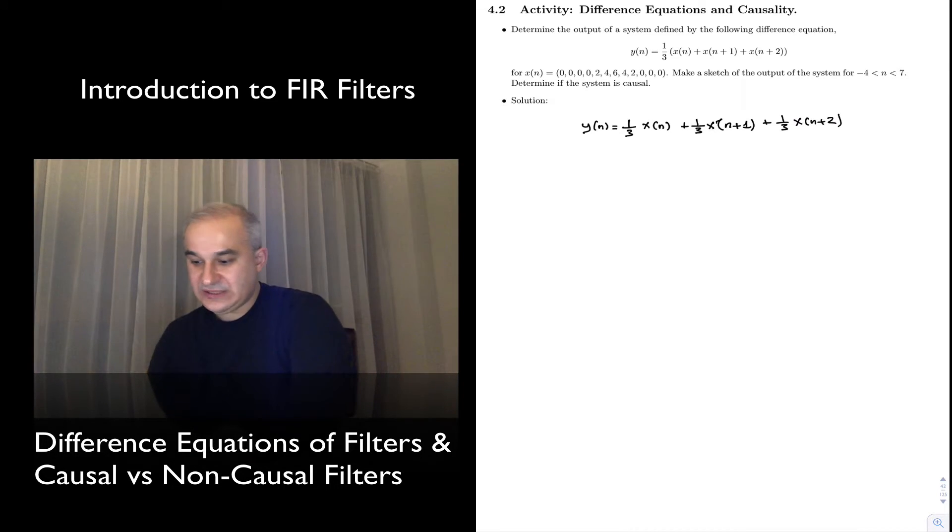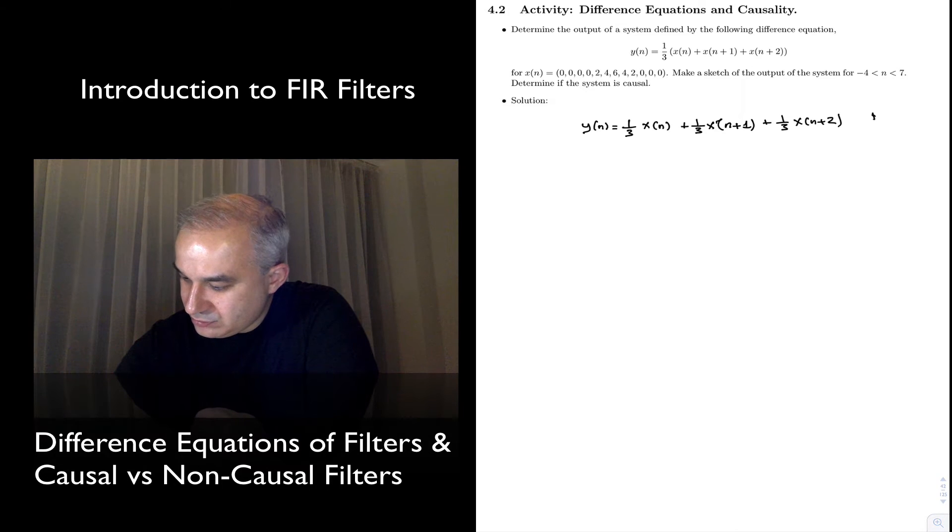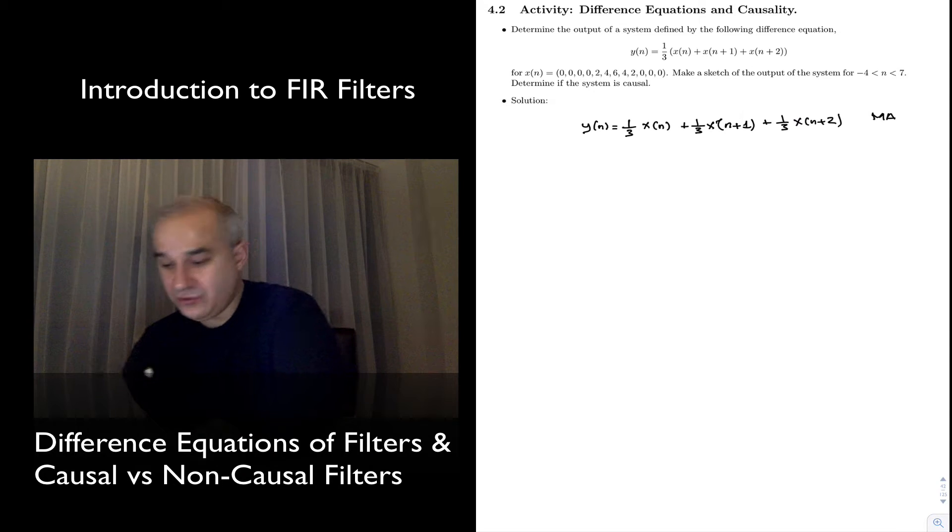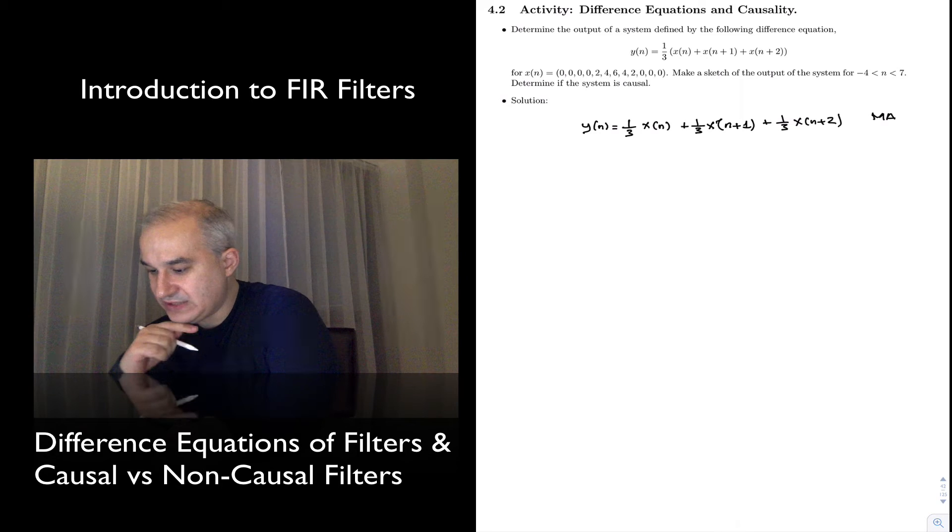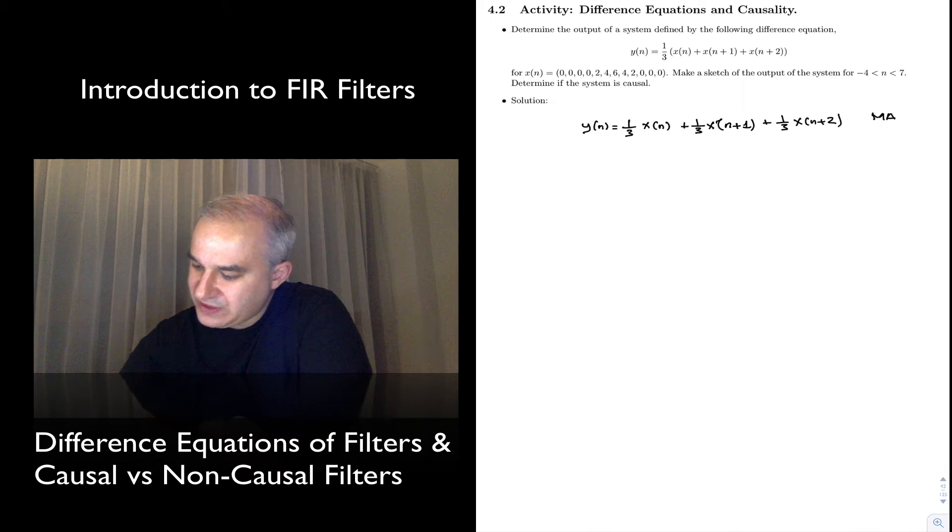So, we see that this is a moving average. We are averaging values, three values. It's a three-point moving average. We also can see, by the way, that this is non-causal.